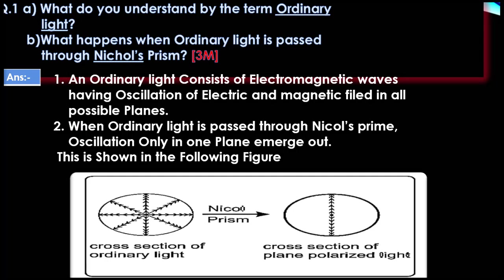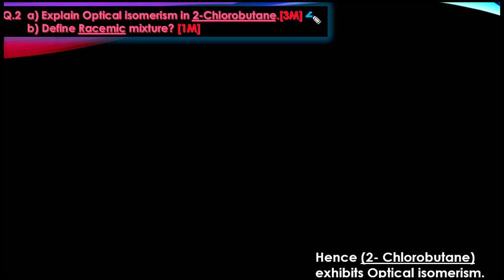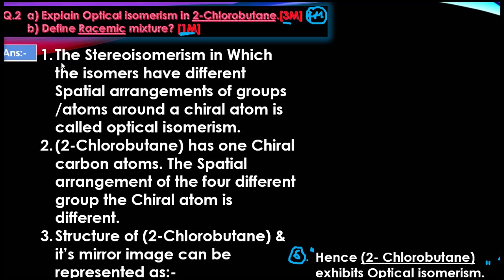The next very important question is: explain optical isomerism in 2-chlorobutane. The second question is: define racemic mixture. These can be asked combined for marks or as separate questions — 2-chlorobutane for 3 marks, racemic mixture for 1 mark. First, 2-chlorobutane exhibits optical isomerism. Stereoisomers in which the isomers have different spatial arrangement of groups and atoms around the chiral atom are called optical isomers.